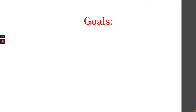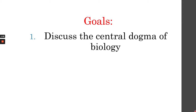At the end of this lesson, lesson 2, what I want everyone to understand and be able to do is first discuss the central dogma of biology. The central dogma of biology is basically DNA, then RNA, then protein. It's basically telling us what happens — the process of DNA and the production of proteins, which basically leads to gene expression.